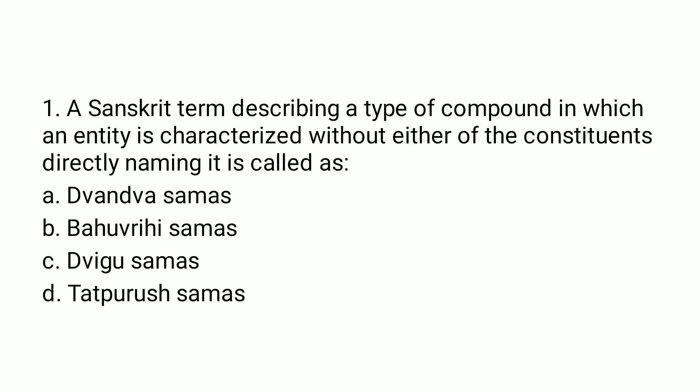Question 1 is about a Sanskrit term describing a type of compound in which an entity is characterized without either of the constituents directly naming it. This type of compounding is known in English as exocentric or possessive compounds, and in Sanskrit it is called bahuvrihi samas. One example is 'loudmouth', which means a person whose mouth speaks loudly, and another is 'scarecrow', which refers to an object whose job is to scare crows.